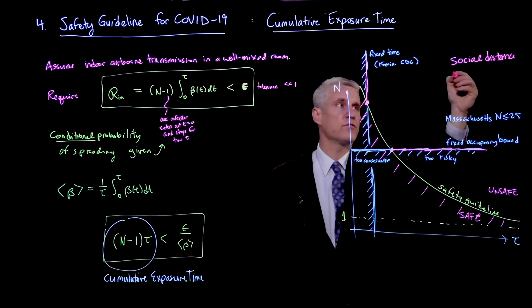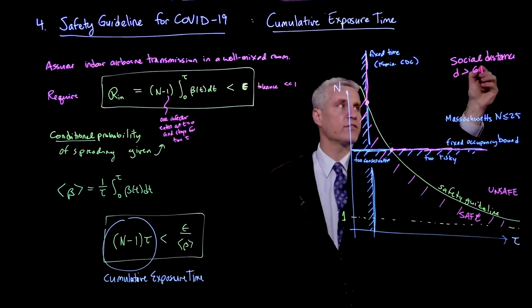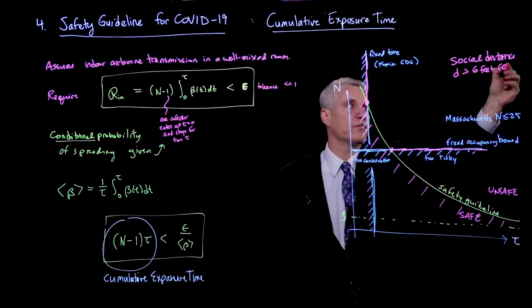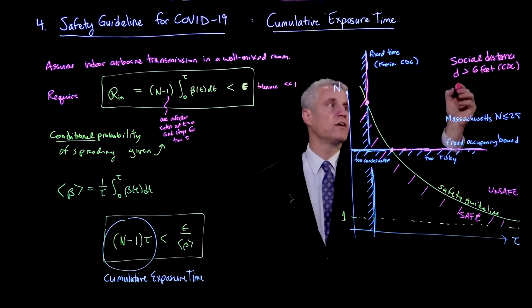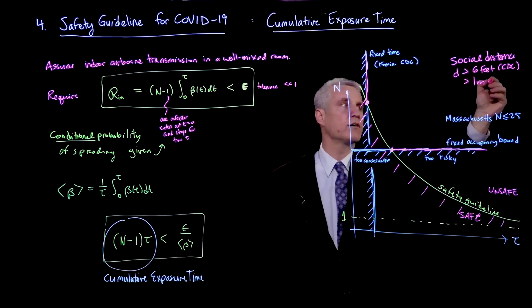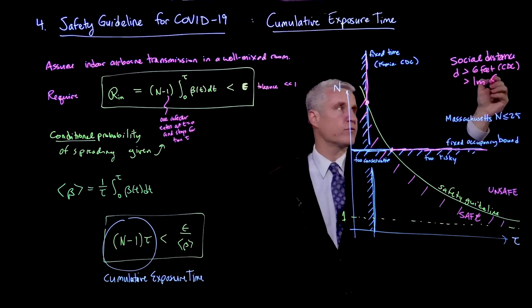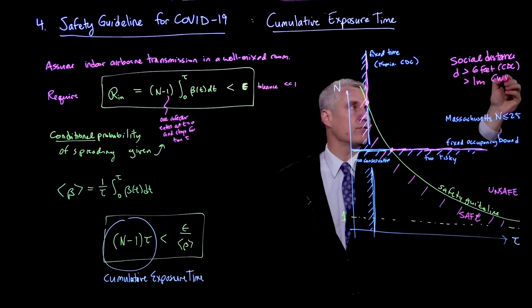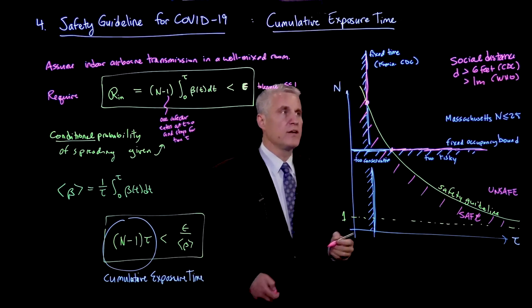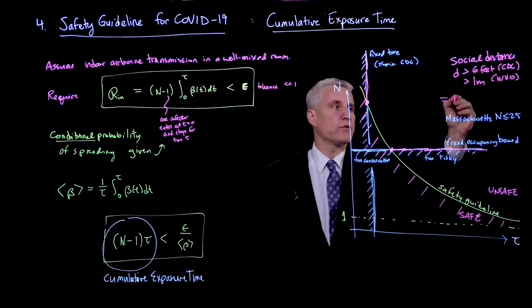So this would be that the distance d is greater than 6 feet. And that's a CDC guideline in the United States. It can be greater than 1 meter, which is around 3 feet. And that's from the World Health Organization. So about half the distance. And that leads to a guideline where there's still a maximum occupancy.